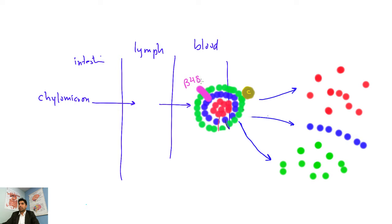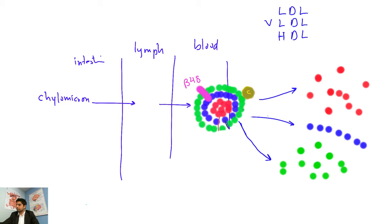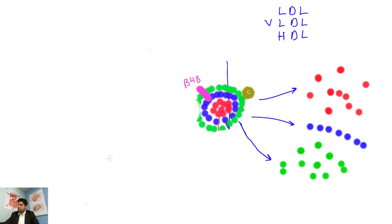Now we have plasma apoproteins. B-48 was a GI apoprotein produced by enterocytes. Now we're talking about plasma apoproteins. We have something known as LDL, VLDL, and HDL. H stands for high, L for low, V for very, D for density, and L for lipoprotein. LDL is primarily cholesterol — about 60% cholesterol.